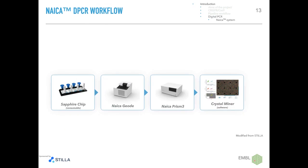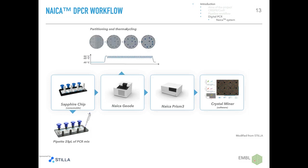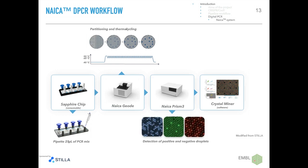Most of our experiments were obtained using the NICAS system from Stilla Technologies, where the partitions are called droplets. The droplets are generated by emulsifying the PCR mix in oil. The typical workflow involves loading the digital PCR mix into a dedicated chip pre-filled with oil, followed by partitioning and thermocycling combined in the NICAS Geode device. Then a separate reading of the individual chambers is performed in the NICAS Prism 3 device, and data is analyzed with CrystalMiner software.